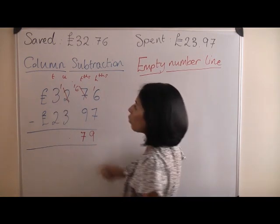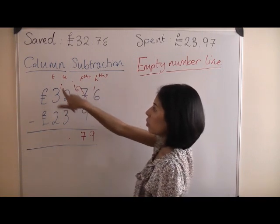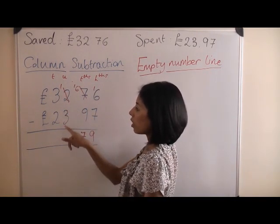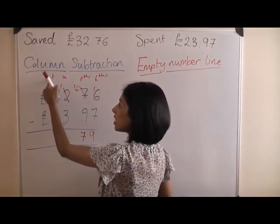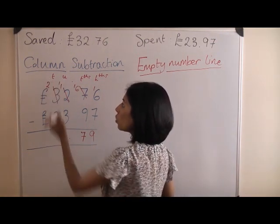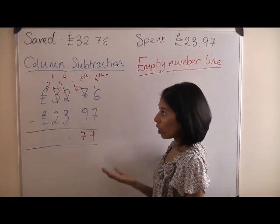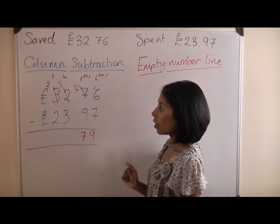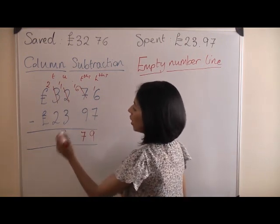Now because we borrowed a pound and moved it to the tens column, we now have one pound. One pound take away three pounds. Again, it's not possible, so you need to borrow from the tens column. That becomes a two. And you've now got eleven pounds. Take away three. Eleven take away three. Well, eleven, ten, nine, eight. Eight pounds.